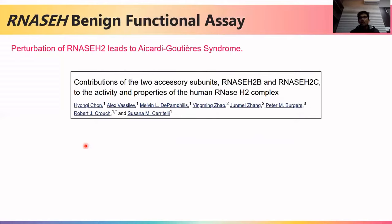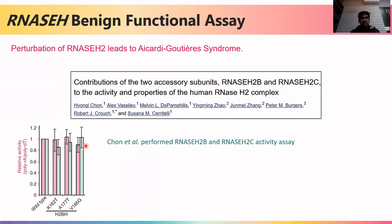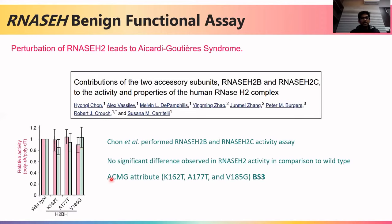For a benign example using RNSH gene variants responsible for cardiovascular syndrome, a study by John et al. examined RNSH2P and RNSH2C activity assays. For wild type, activity is 1.0. For the three variants K162T, A1770, and V185G, the reduction in activity is not substantial — none are below 0.8, meaning not less than 80% activity. Since activity is not less than 50% and remains comparable to wild type, these variants are not considered pathogenic and are marked as BS3 (benign strong 3).